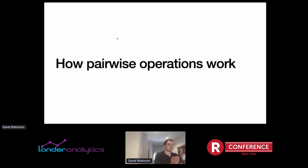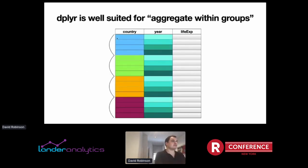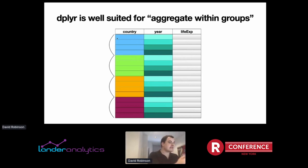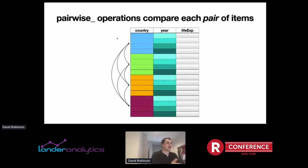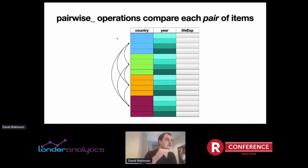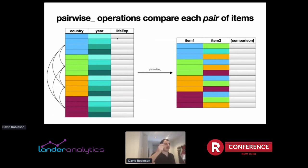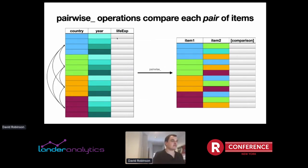Pairwise_cor is one example of the many pairwise operators that YDR provides. Dplyr is really well suited for aggregating within groups — within each country, say the average life expectancy. It takes a table with several observations for every country and aggregates them into one observation. That's a group-by-and-summarize pattern, sometimes called split-apply-recombine. What pairwise operations do instead is compare every pair of items. So instead of ending up with one observation for each of four countries, we end up with 12 observations — one for every combination of one country and another.